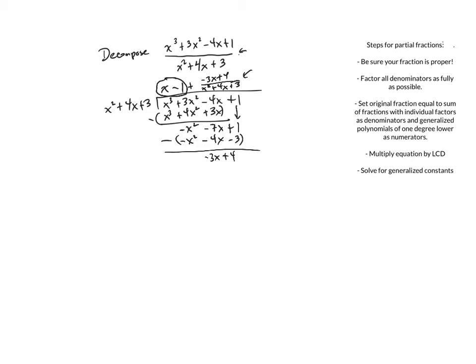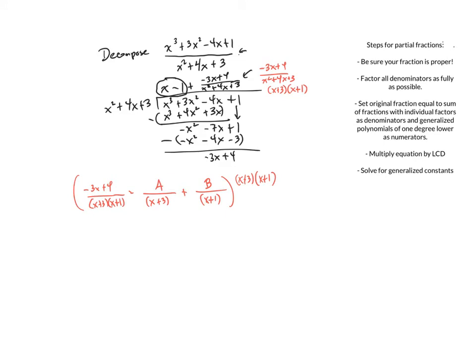I'll focus on decomposing the fractional part: negative 3x plus 4 over x squared plus 4x plus 3. Factoring the denominator gives x plus 3 and x plus 1. I set the fraction equal to A over x plus 3 plus B over x plus 1, then multiply both sides by the LCD. The x plus 3s cancel for the first fraction and the x plus 1s cancel for the second.